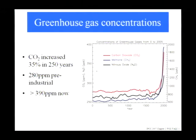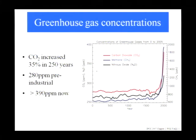We've seen this graph already in various forms this morning — CO2 levels have gone up about 35% in the last 250 years, from around 280 ppm pre-industrial to over 390 ppm now. It was relatively stable under 300 ppm for 2,000 years, and in fact CO2 has been pretty stable below 300 for over 650,000 years. So we're really in very uncharted territory.